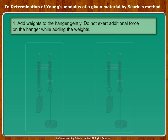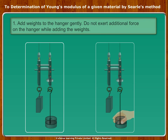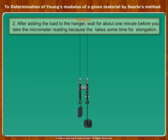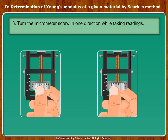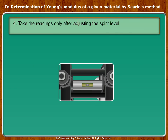Precautions: 1. Add weights to the hanger gently; do not exert additional force on the hanger while adding the weights. 2. After adding the load to the hanger, wait for about 1 minute before taking the micrometer reading because the wire takes some time for elongation. 3. Turn the micrometer screw in one direction while taking readings. 4. Take the readings only after adjusting the spirit level.